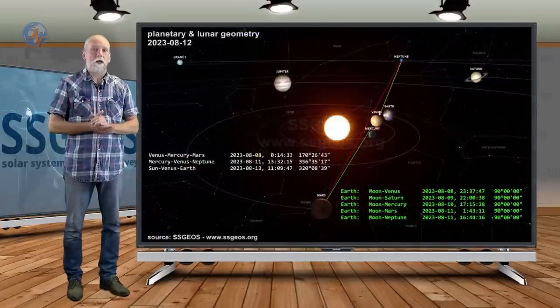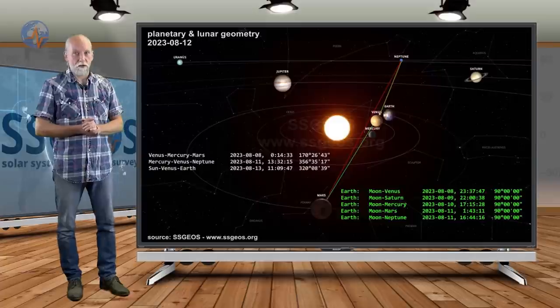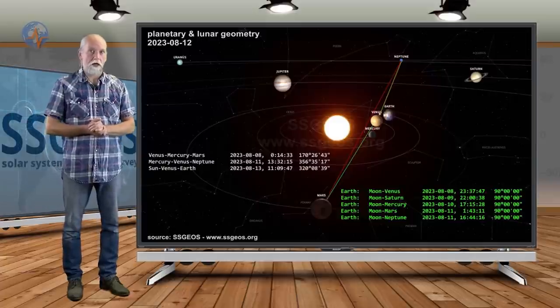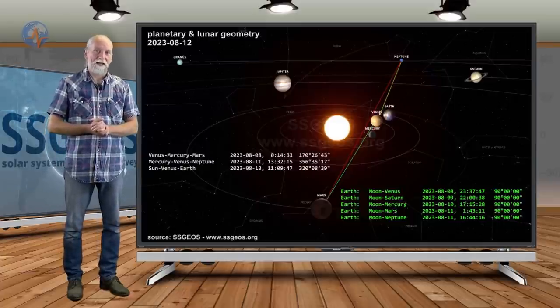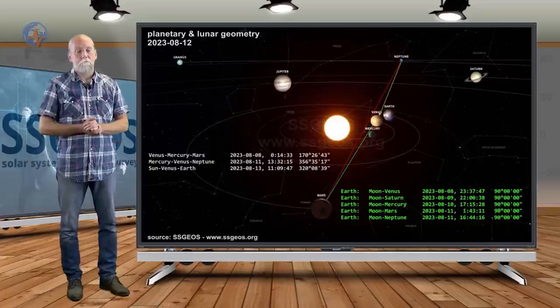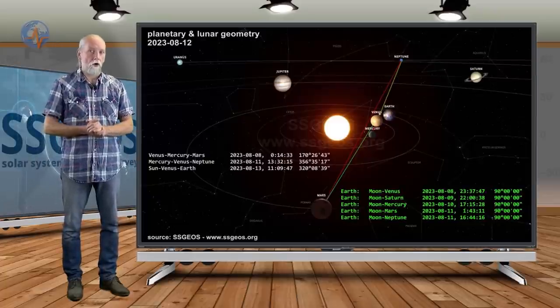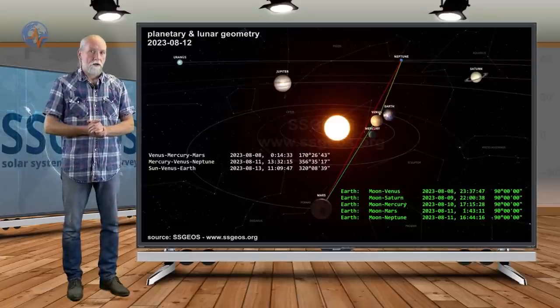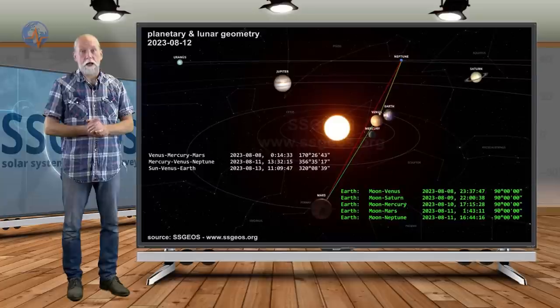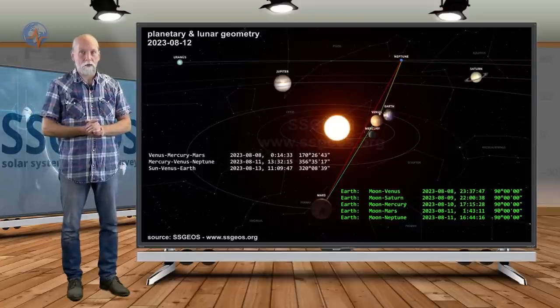Later on in August, we're going to have critical geometry with Neptune. That shouldn't be underestimated. There is a high probability of a magnitude 8, maybe mid-8 magnitude, most likely in the second half of August. Of course, I will discuss that in more detail. I've already discussed that in a recent update, but I will discuss that in detail when we get there.